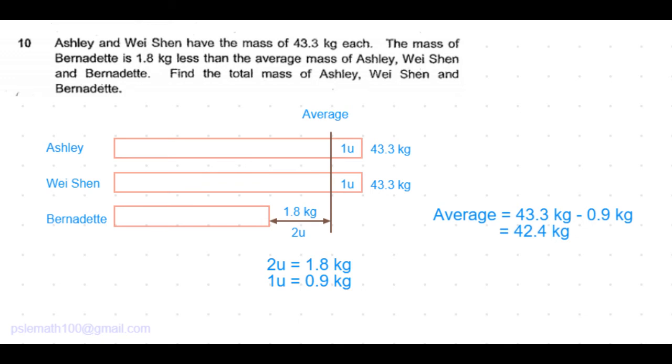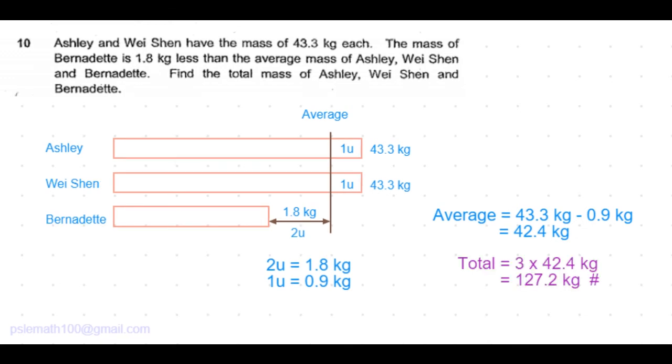Now that we have the average mass, total is 3 times the average, which is equal to 3 times 42.4 kilograms, is equal to 127.2 kilograms. So that's the total mass of the three girls.